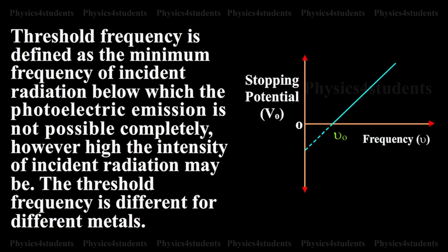Therefore, threshold frequency is defined as the minimum frequency of incident radiation below which the photoelectric emission is not possible completely, however high the intensity of incident radiation may be. The threshold frequency is different for different metals.